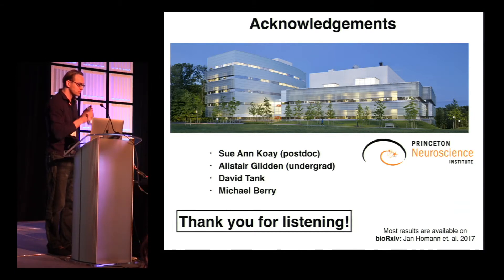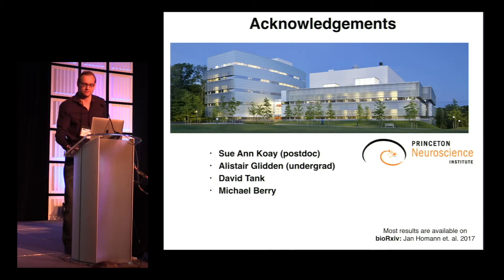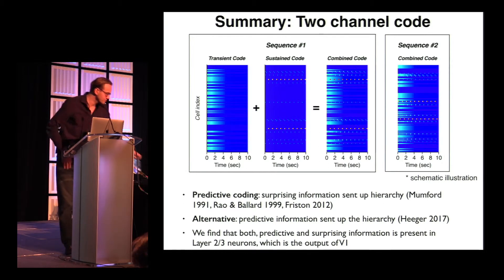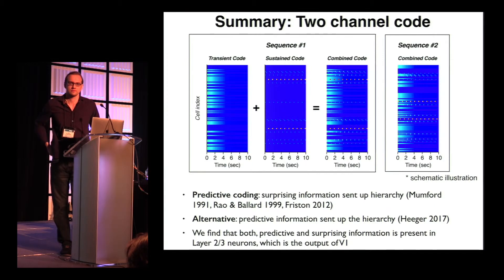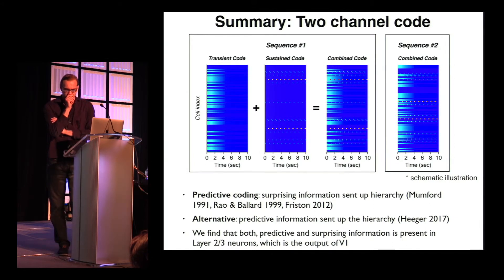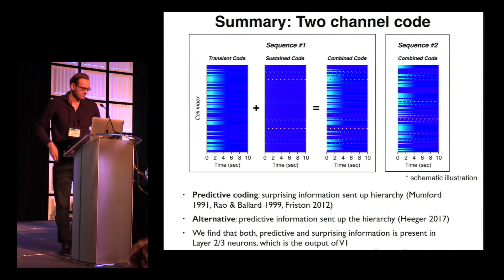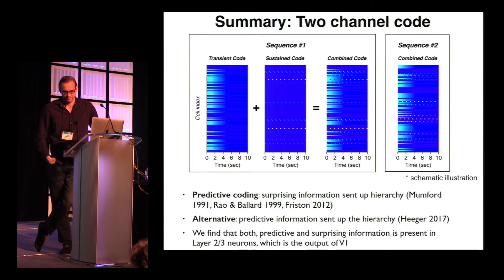There seem to be two notions of novelty at play simultaneously. One is that novelty arises because the wrong stimulus arrives at the wrong position in the sequence. The other is that the sequence order is irrelevant and it's really the distribution of stimuli being adapted to. This particular experimental design doesn't quite allow you to distinguish between the two — have you tried to look at that?